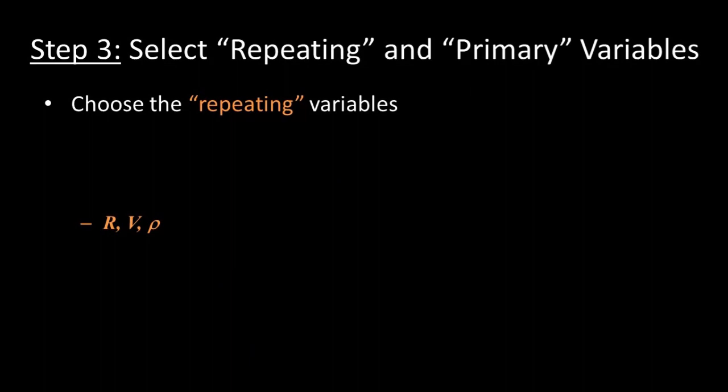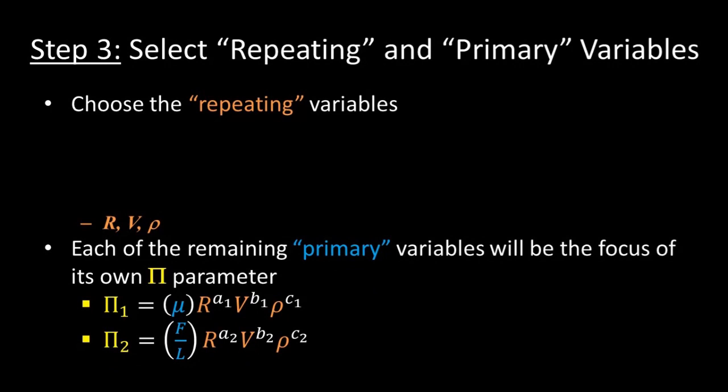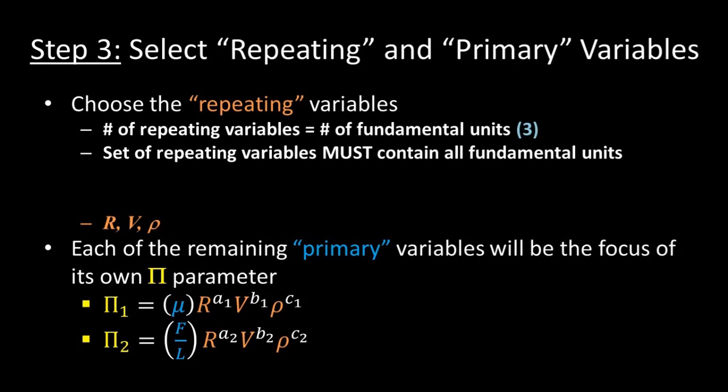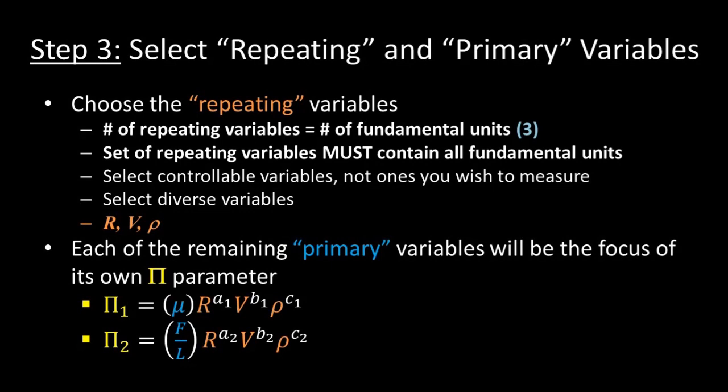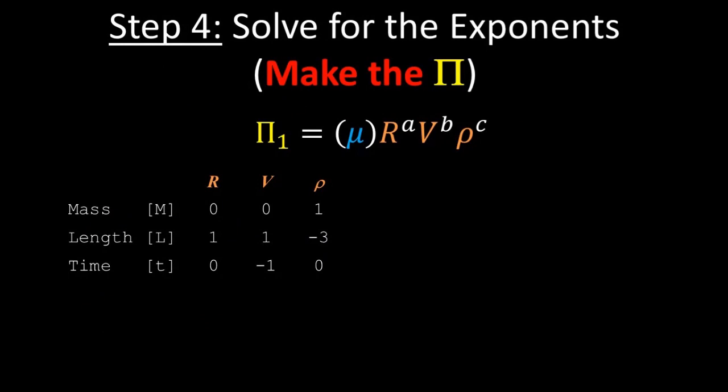Step 3. Select the repeating variables and the primary variables. Each pi parameter will consist of one primary variable multiplied by the repeating variables in such a way that the units cancel out. Two hard and fast rules for selecting the repeating variables. One, the number of repeating variables equals the number of fundamental units, three in this case. And two, the set of repeating variables must contain all fundamental units. So we'll choose three out of five of our variables to be repeating variables, while each of the other two variables will be the focus of its own pi parameter. Also, two more soft rules or suggestions for selecting the repeating variables. One, select variables that are easy to control experimentally. Variables that are hard to control or that you're interested in measuring, like force, should not be selected. Two, select diverse variables. For instance, we started by categorizing the variables as either geometric, kinetic, or material properties. So we're going to select one variable from each category: radius, density, and velocity.